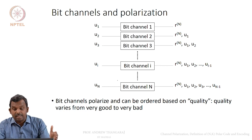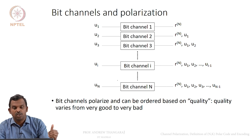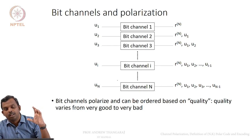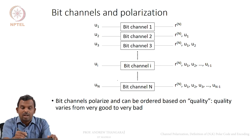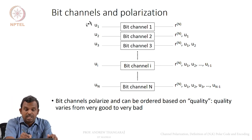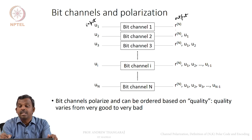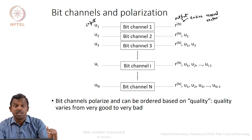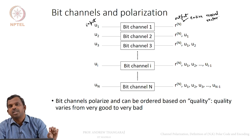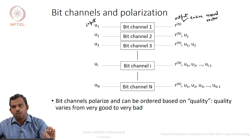After polarization, you can decompose or view what happened to the individual bits in a sequential way. You convert the N channels into N combined bit channels. The first bit channel is defined as follows: U1 is the input to the first bit channel, and the output is the entire received vector RN. This is just a definition — the first bit channel has U1 as input and the entire received vector as output.